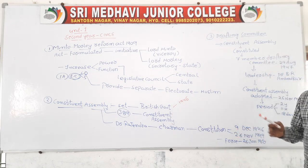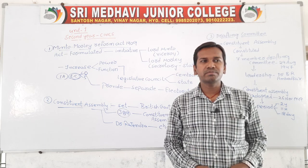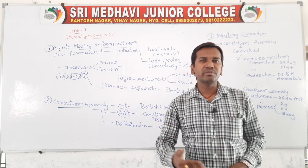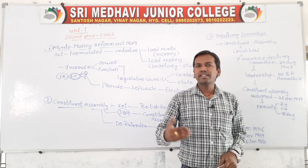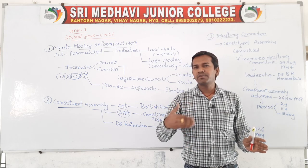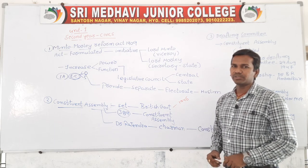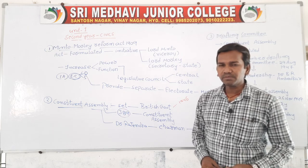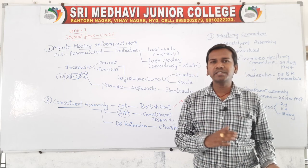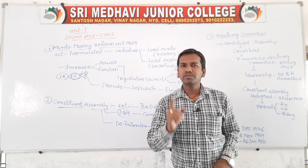The British realized they had to give independence to India and advised the Indian people that they had to prepare a constitution. If India was going to get independence and run the country, a constitution is very important. That is why the British helped set up the Constituent Assembly to support India in preparing a constitution. India was not willing to accept the British constitution, so it became necessary to set up the Constituent Assembly.